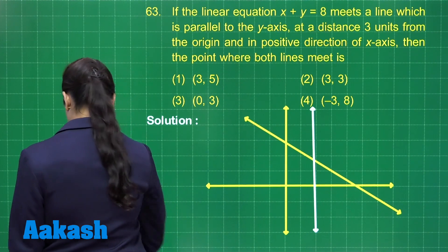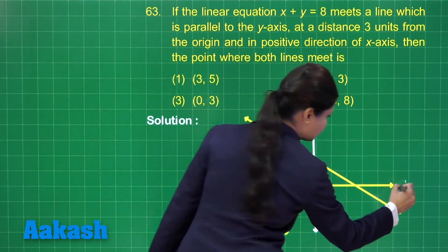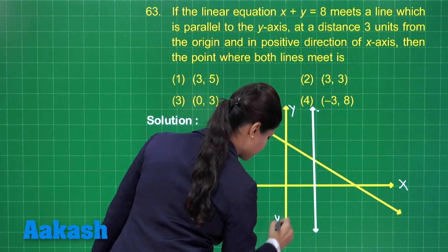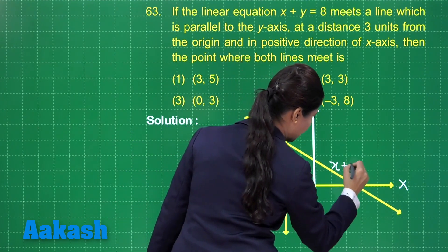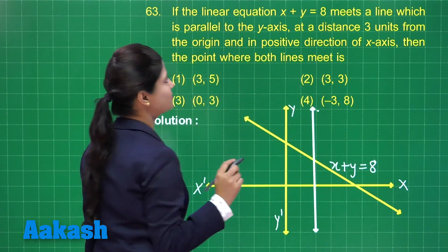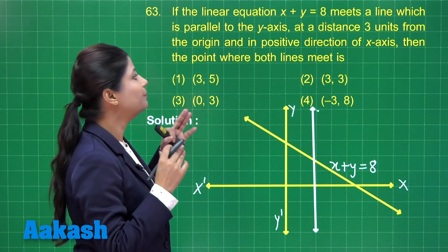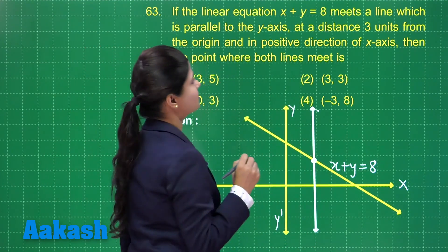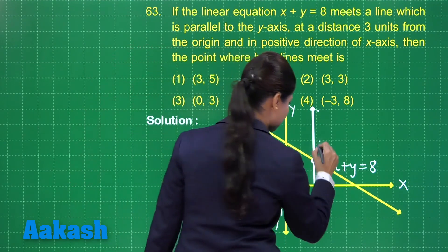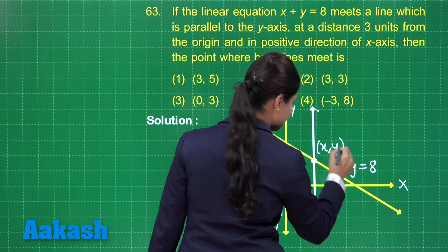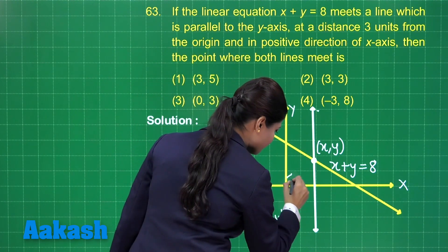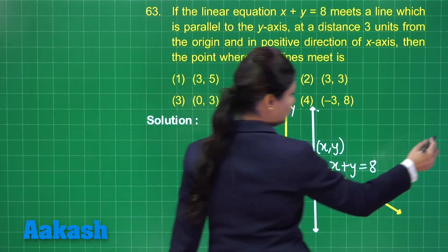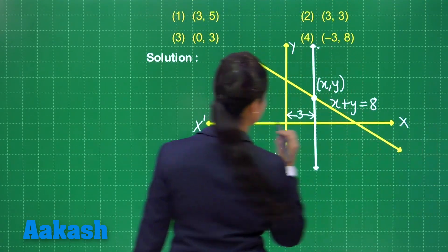The line parallel to the y axis lies on the Cartesian plane with the x axis and y axis shown. The line x plus y equal to 8 is plotted. It is clearly mentioned that this line meets the parallel line at 3 units from the origin, meaning the x coordinate at that point will definitely be 3.